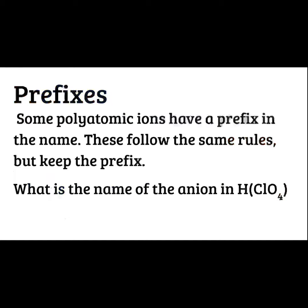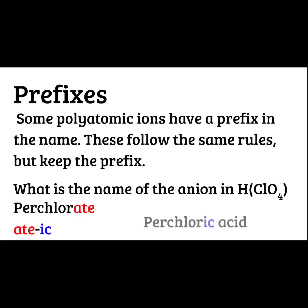Some polyatomic ions have a prefix in the name, so we follow that same rule — we just keep the prefix. Here I have HClO4; ClO4 is perchlorate. It still ends with -ATE, so we're still just going to change the ending and it's going to be perchloric acid.